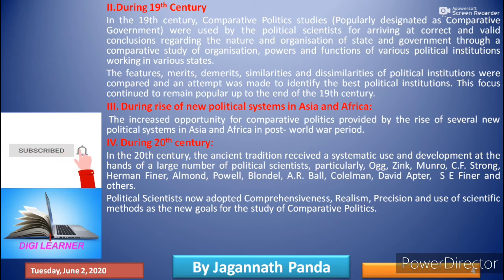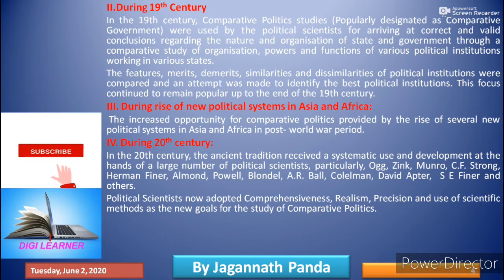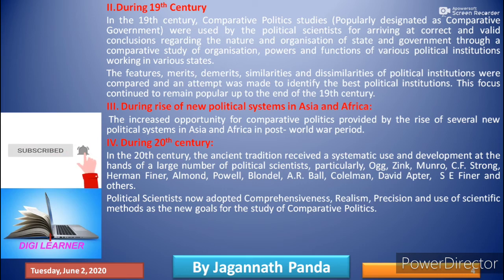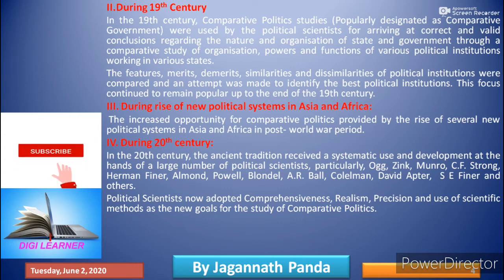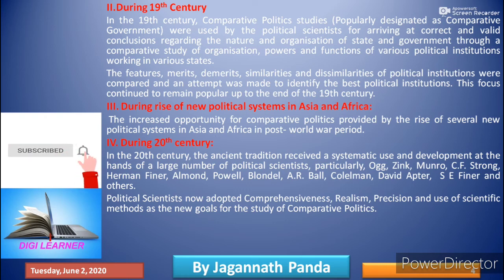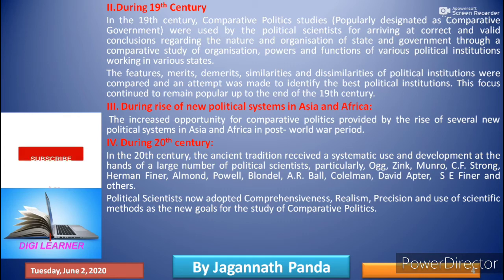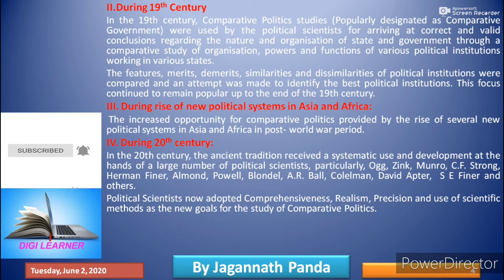In the 19th century, comparative politics studies — popularly designated as comparative government — were used by political scientists for arriving at correct and valid conclusions regarding the nature and organization of the state and the government. Through a comparative study of organization, power, and functions of various political institutions, the features, similarities, and dissimilarities of political institutions were compared in an attempt to identify the best political institutions.